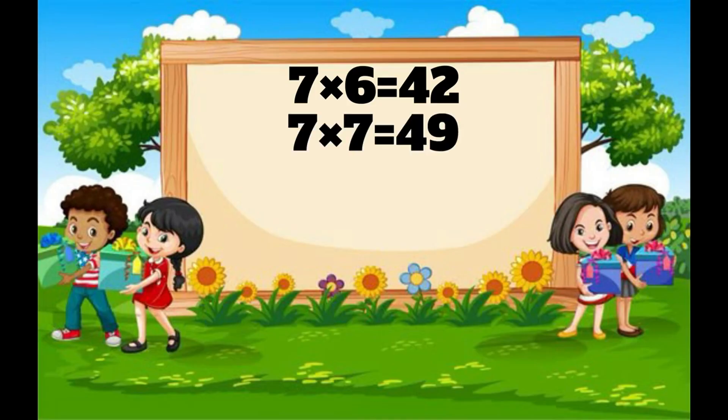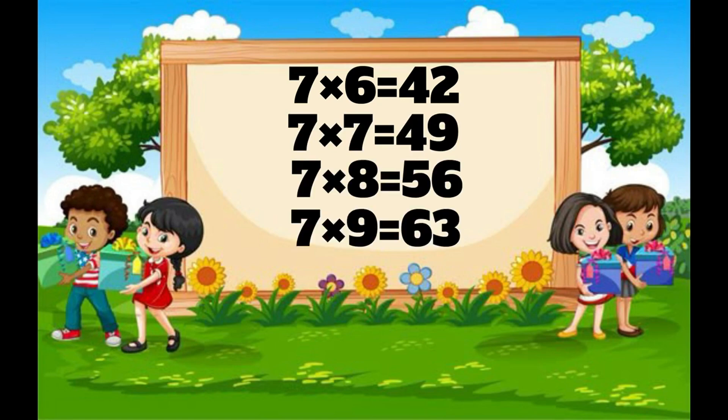7 7s are 49. 7 8s are 56. 7 9s are 63. 7 10s are 70.